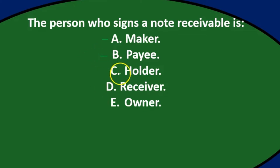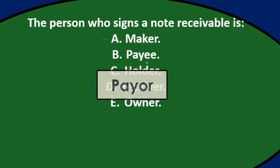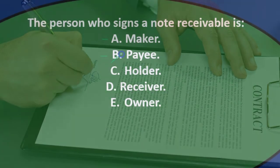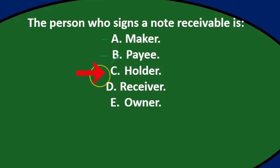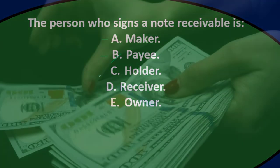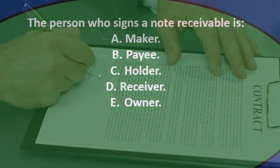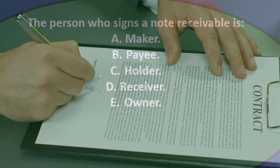Option B is the payee. The difference between payee and payor is a bit confusing. The payor is the one who eventually makes payment at the end of the note term. The payee is the one receiving payment. The payee may sign the note but is not really required to — the one making the promise to pay is the one who needs to sign.